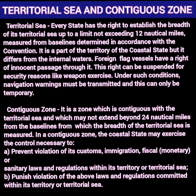In the contiguous zone, a coastal state may exercise control necessary to prevent violation of its customs, immigration, fiscal, or sanitary laws and regulations within its territory or territorial sea. It can also punish violations of those laws committed within the territorial sea. Essentially, in the contiguous zone the rights are a little less — the state can prevent certain acts and punish offenses committed in the territorial sea. If a foreign vessel enters territory, commits a crime, the state has another 12 miles after the territorial sea ends to catch and punish the offender.